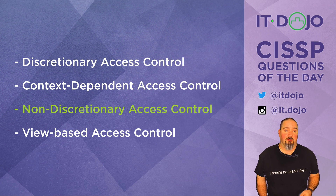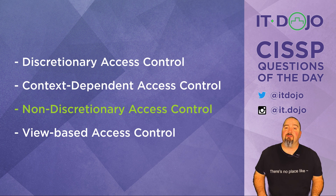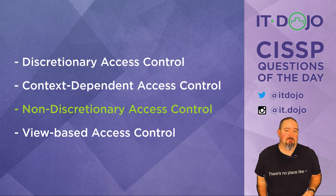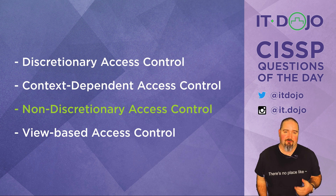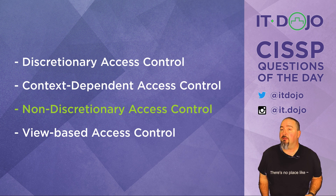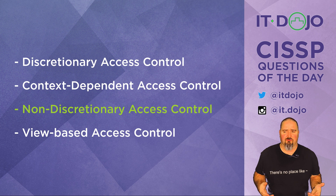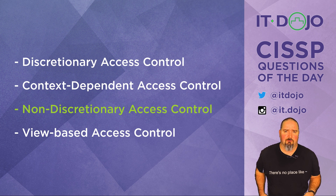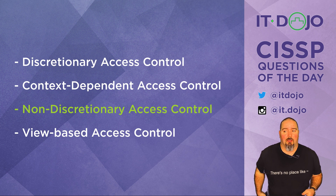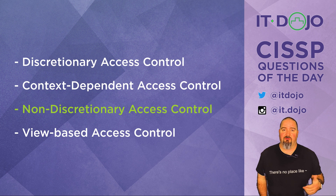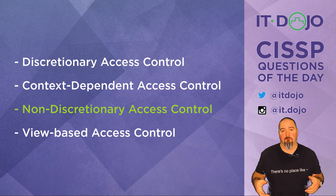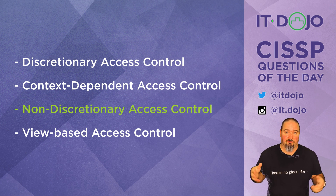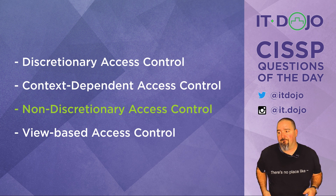The final choice on our list was view-based access controls — definitely not even in the realm of being the right answer choice here. View-based access controls are very commonly associated with databases, where we go in and create a constrained view, which is really just a dynamically generated table that only allows you to see a subset of the information. It's almost always created as the result of a query that generates a dynamic table — called a view — that allows you to see certain things.